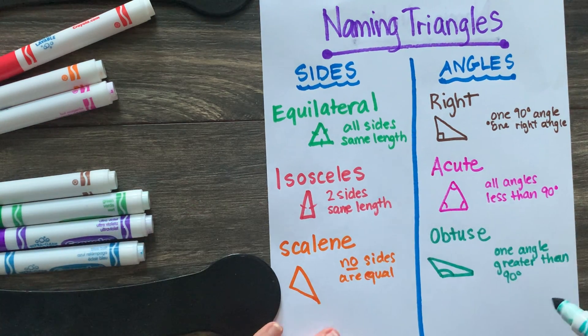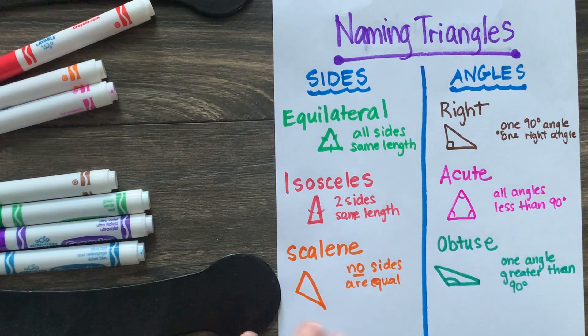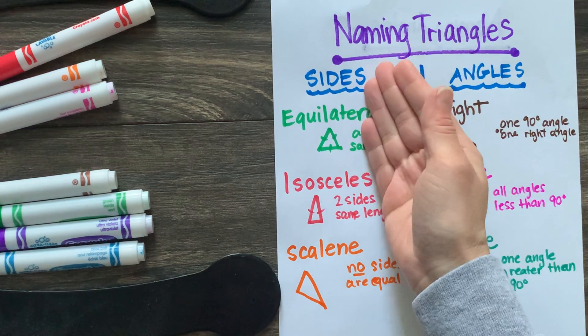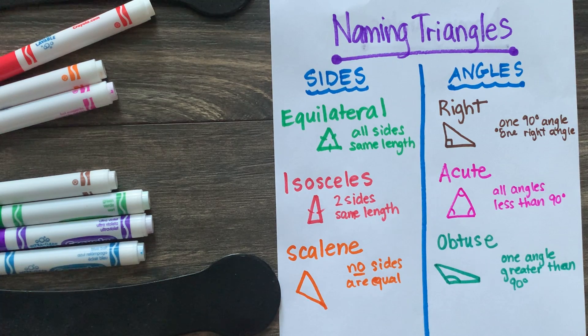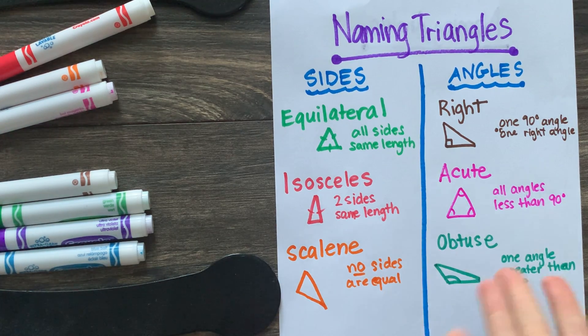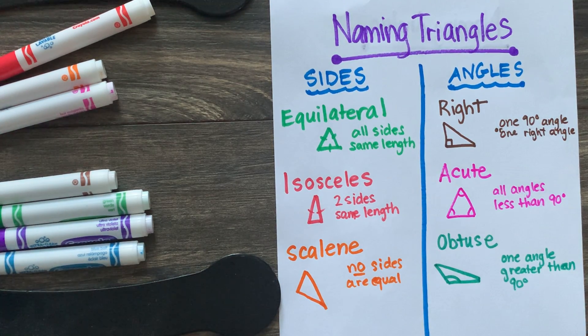So when you name triangles, technically they have two names to them. They have a side name and then they have an angle name. So I believe that's on one of your practices. Again, I'll take a picture of this and send it to you. Thanks so much.